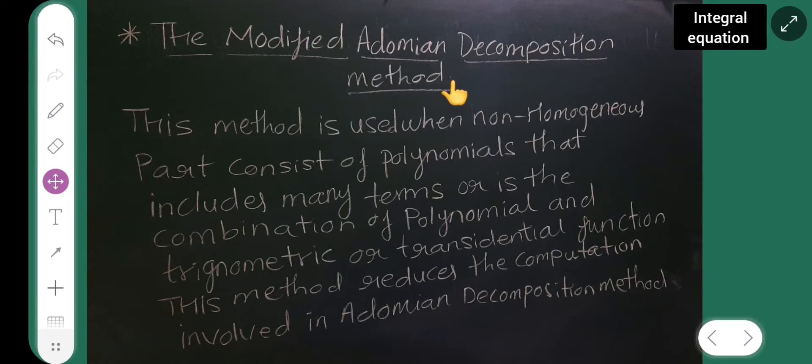It is used when non-homogeneous part consists of polynomials that includes many terms or is the combination of polynomial and trigonometric. Either it should be the combination of the polynomials or trigonometric or transcendental function.